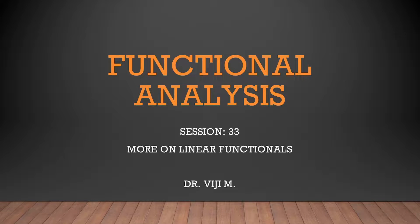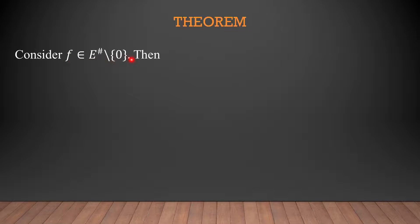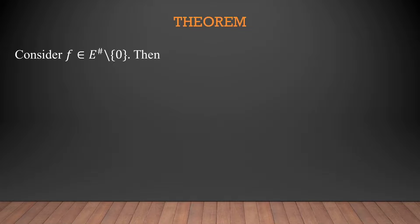Welcome to the next session on functional analysis. In this session we will continue our discussion on linear functionals. We are going to discuss a theorem. Suppose f is a non-zero linear functional on e, where e is a linear space and f is not identically equal to 0 — that is what is meant by f element of e-hash minus 0. A linear functional means it is a linear transformation from e to k, where k is the scalar field.